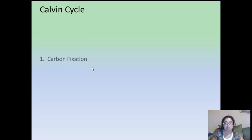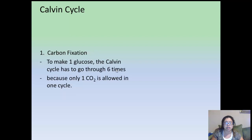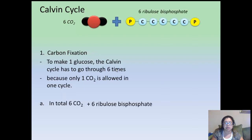The first step is carbon fixation. This is where plants take the opportunity of taking carbon dioxide from the environment and putting it into a chemical form of sugar. To make one molecule of glucose, the cycle has to go through six times because only one carbon dioxide is allowed per cycle. In total, six molecules of carbon dioxide combine with six molecules of ribulose-biphosphate, which is a type of five-carbon sugar.